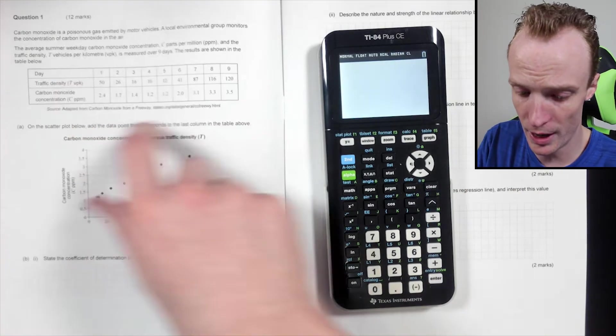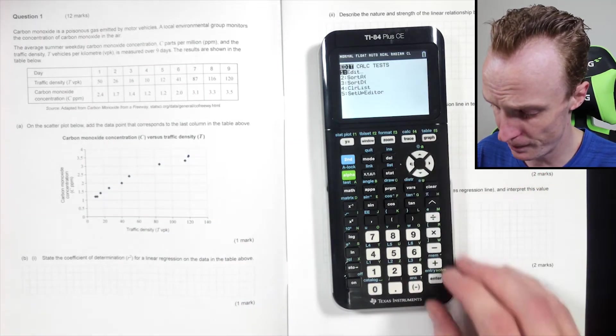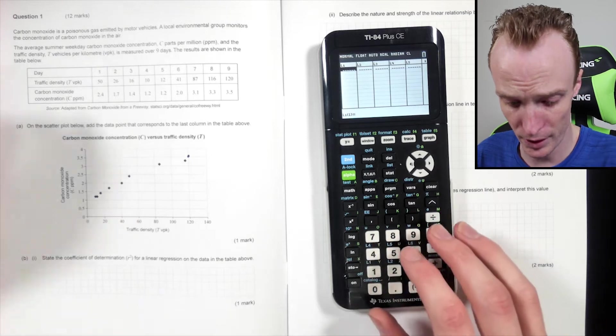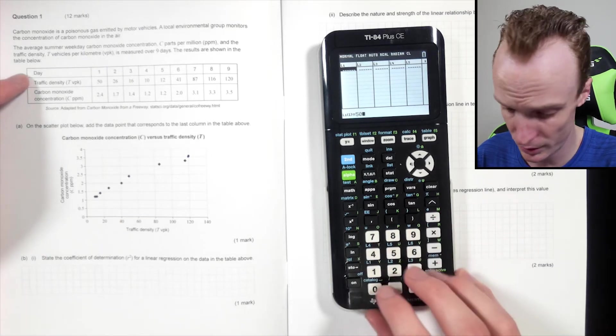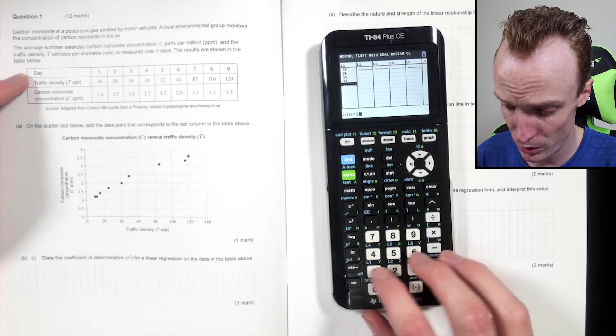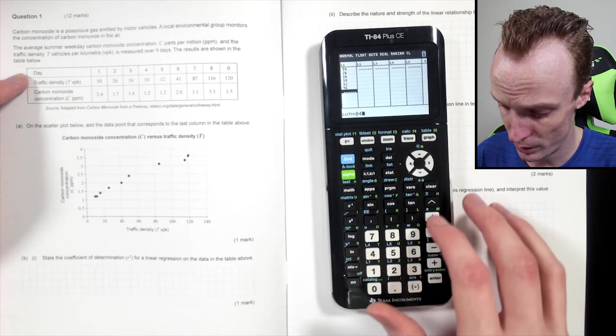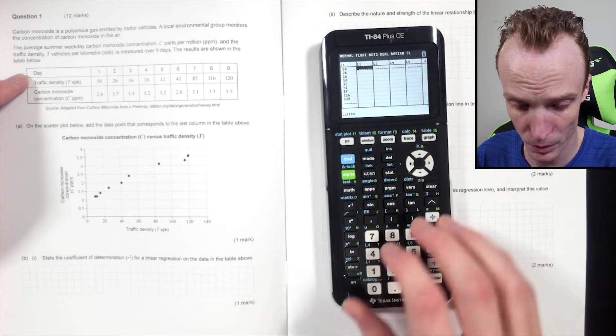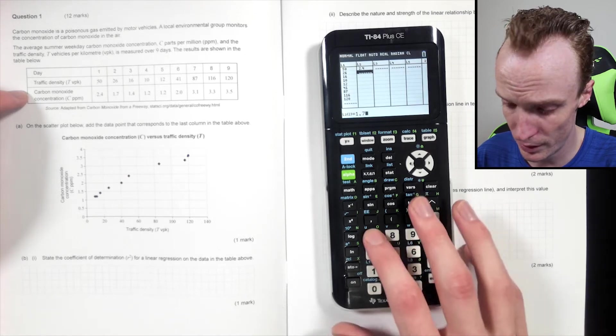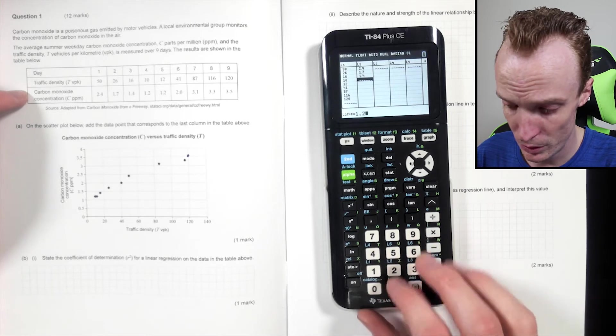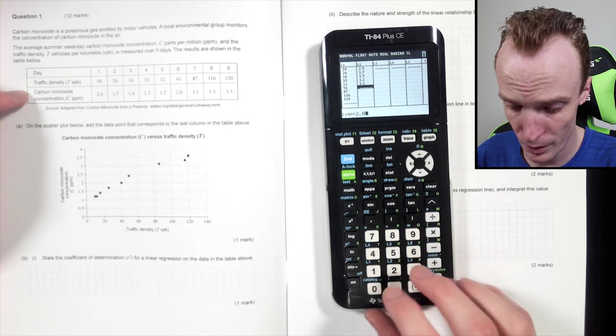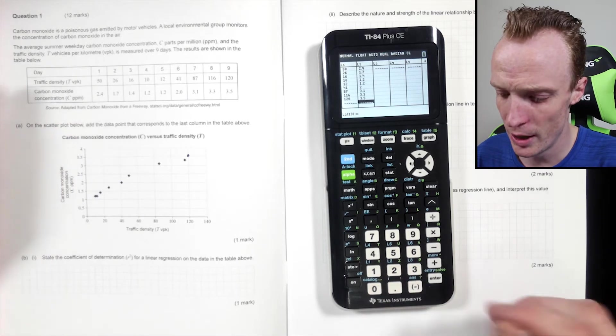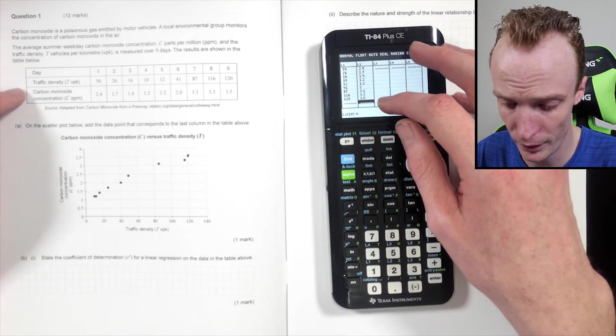If I go to my stat, I'm going to edit, I'm just going to clear out the columns that I've currently got and I want to input all these values here. So my x is the traffic density: 50, 26, 16, 10, 12, 41, 87, 116, 120. And then my y's: 2.4, 1.7, 1.4, 1.2, 1.2, 2.0, 3.1, 3.3, 3.5. It's worth double checking to make sure you've got all the points in there correctly because this will affect your calculations.